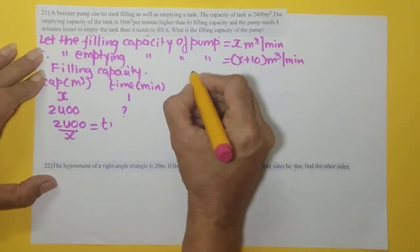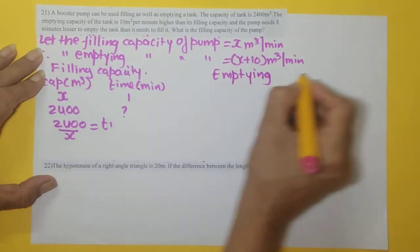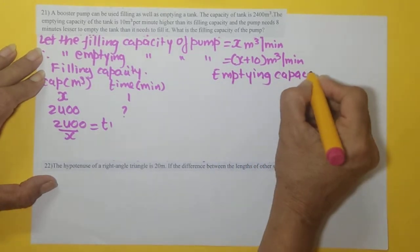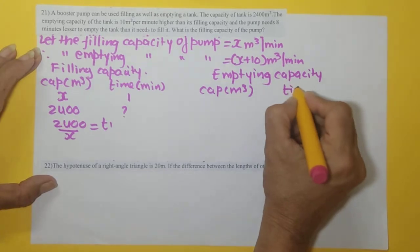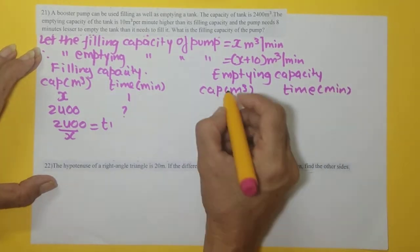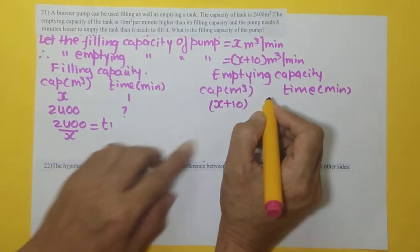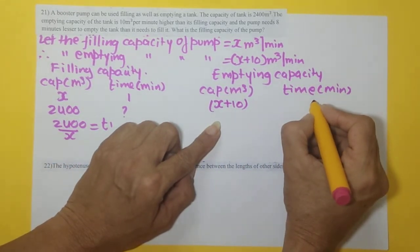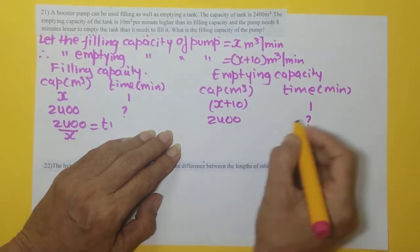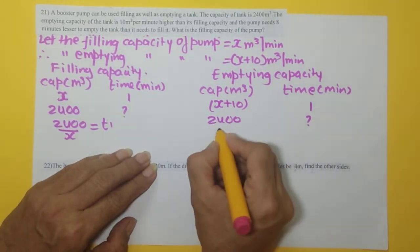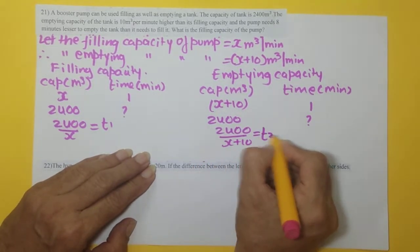Similarly, let us take for emptying. Same way, capacity in meter cube and time in minutes. Here, what is the emptying capacity? Actually, x plus 10 meter cube in how much minute? One minute. Then in 2400, how much? So that will give us our T2. That is 2400 upon x plus 10 will be T2.